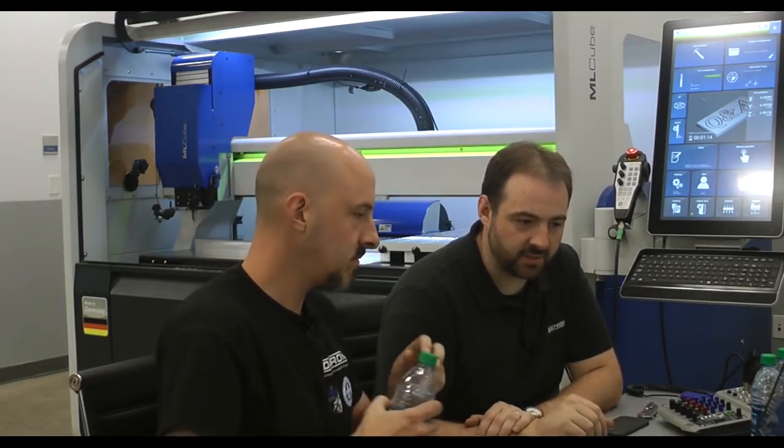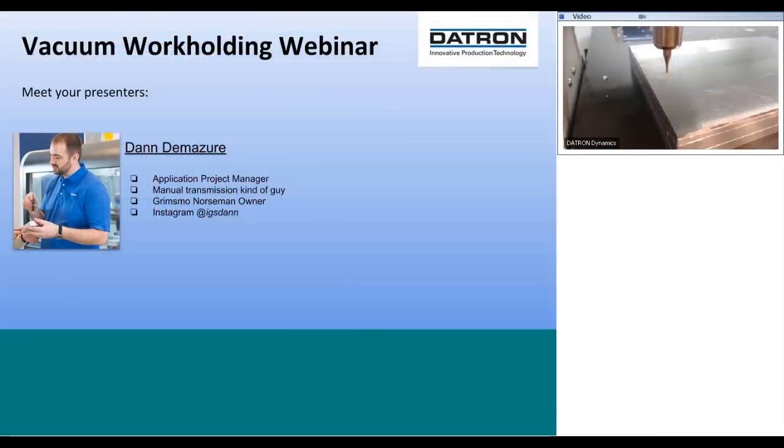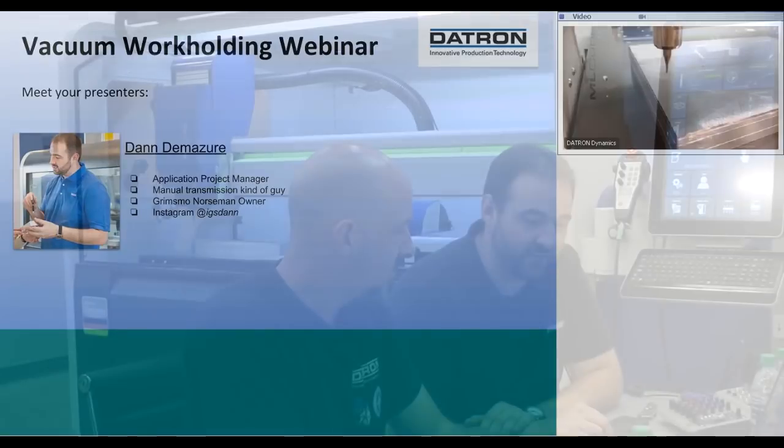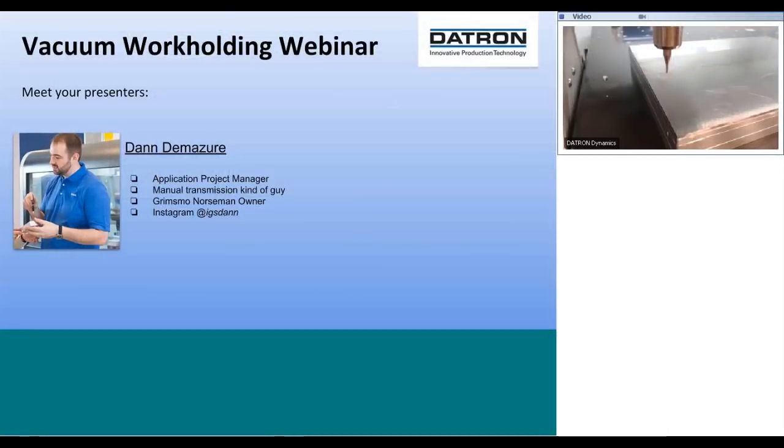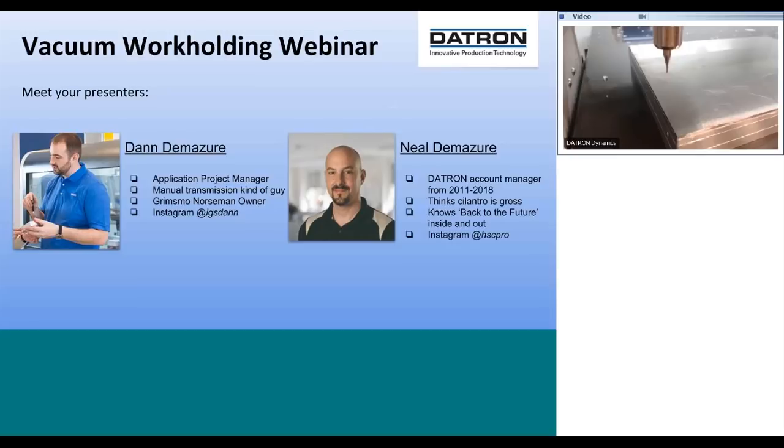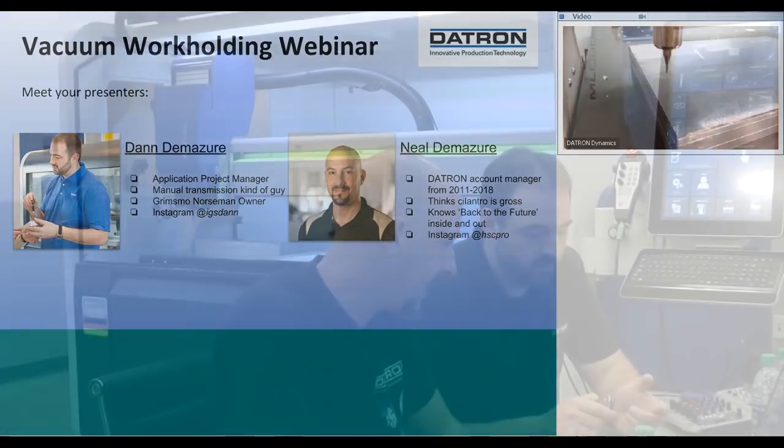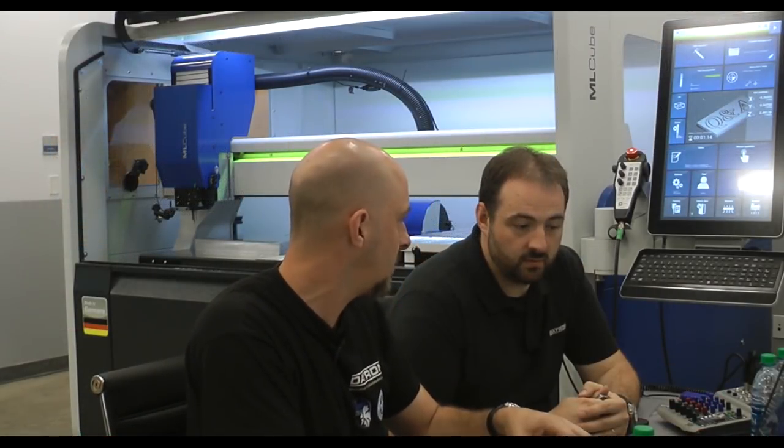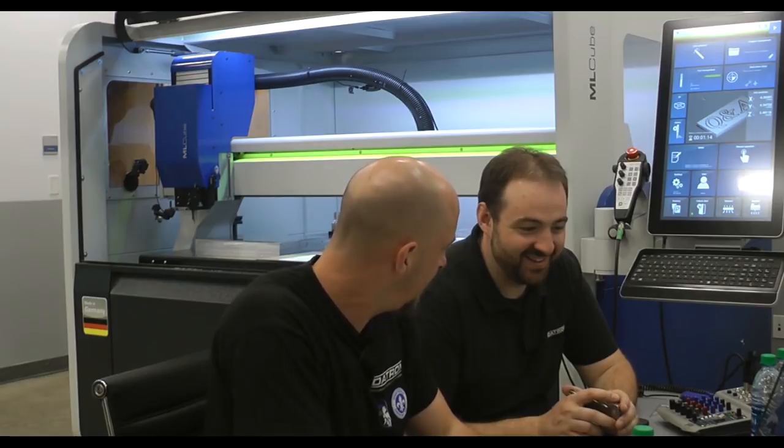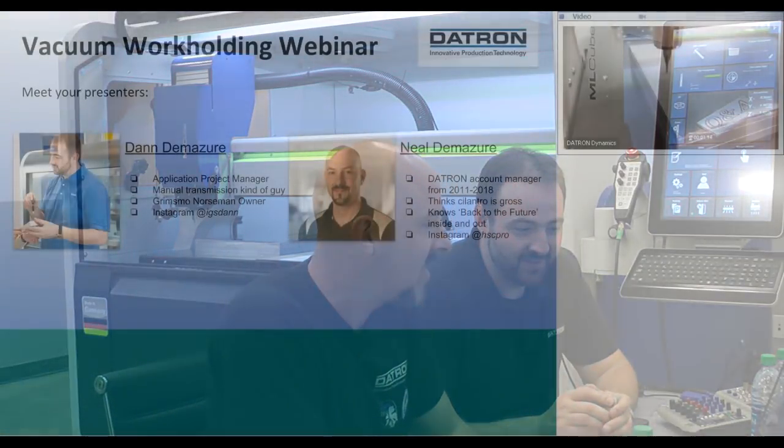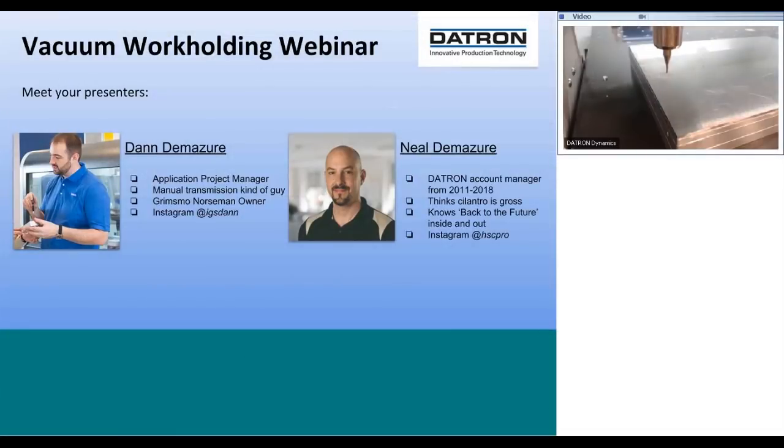Let's take a moment to introduce ourselves. My name's Dan. I'm an application project manager here at Datron. That means I work closely with our sales and marketing department for cool projects like this. I am a manual transmission kind of guy, and I'm a Grimsbo Norseman owner, number 866. I'm on Instagram at IGSDM. I'm Neil Demasier. I was a Datron account manager here from 2011 to 2018. I think cilantro is gross. I'm one of the 50% of the population that is genetically predisposed to hating cilantro. I know Back to the Future inside and out, and you can find me on Instagram at hscpro.